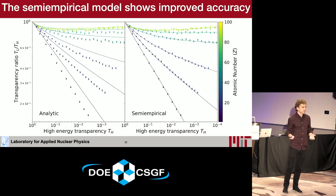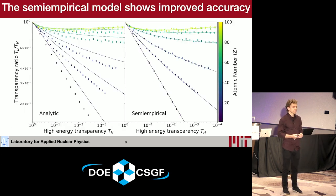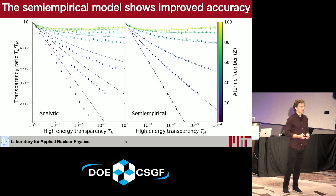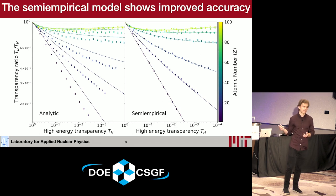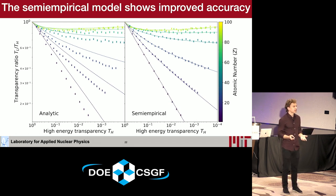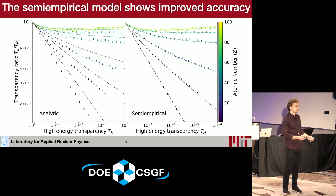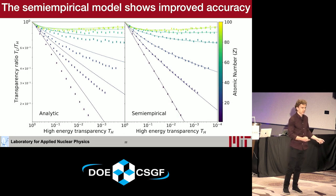Here are the results. The left shows the same plot from before using the uncorrected analytic model. On the right, after a relatively simple calibration step to determine the scaling parameter values, we are able to fit the empirical data quite a bit better. This is exciting because it tells us we can use this analytic framework to make material predictions and trust that those predictions will be accurate.